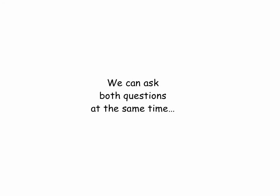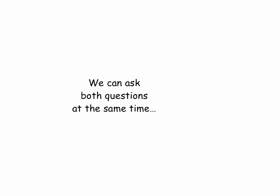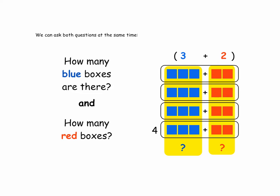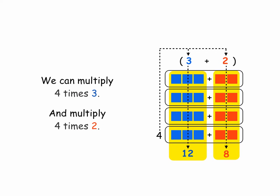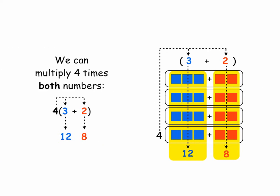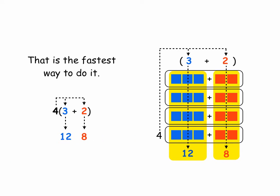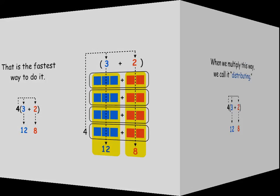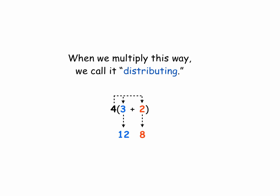We can ask both questions at the same time — how many blue boxes are there and how many red boxes? We can multiply four times three, four rows of three, and multiply four times two, four groups of two. Four times three is twelve. Four times two is eight. We can multiply four times both numbers: four times three is twelve, four times two is eight. That's the fastest way to do it. When we multiply four times both numbers like this, we call it distributing.